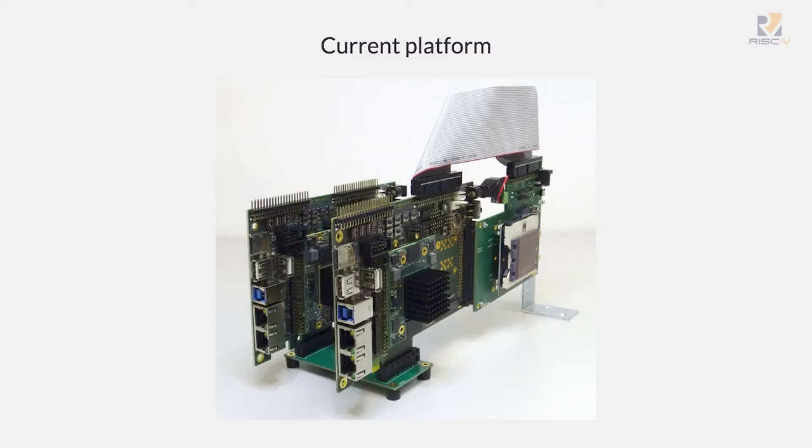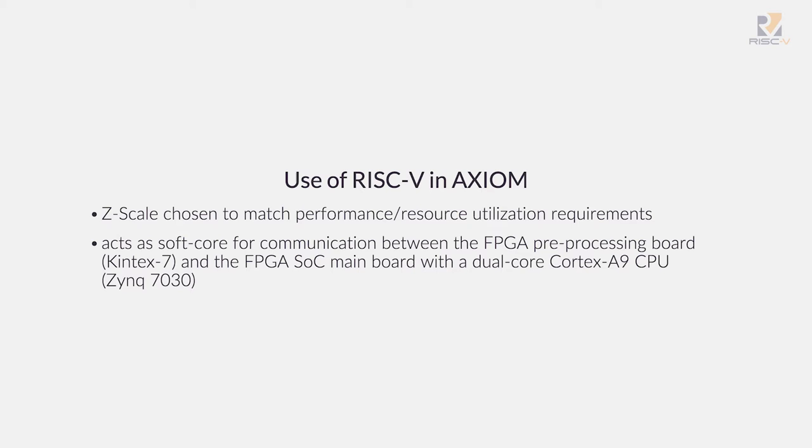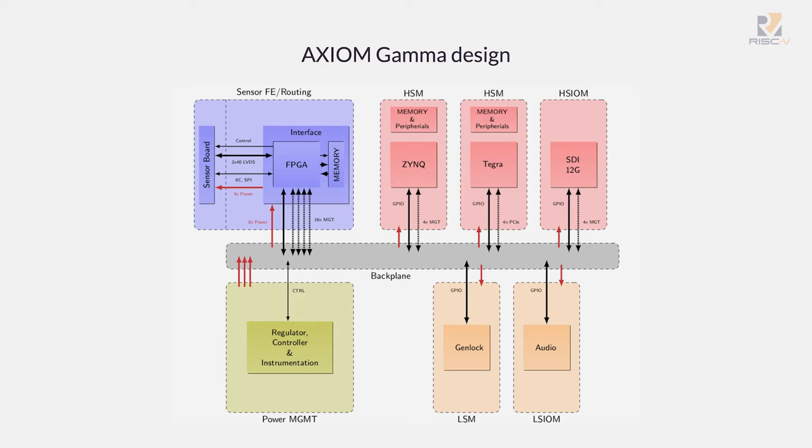Inside this we have the Z-Scale. How did we use RISC-V in Axiom? This is not some rocket science — it's meant as step one to introduce RISC-V into the camera. We chose Z-Scale because it's a readily available implementation. We're using the Verilog implementation now because the Chisel one doesn't fully work. The Z-Scale acts as a soft core for communicating between the two modules via an I2C interface. We configure the FPGA from Zynq, and then the Z-Scale communicates between the Zynq module and the Kintex-7 FPGA, turning on and off different stages of the pipeline and manipulating parameters to get different kinds of video output.